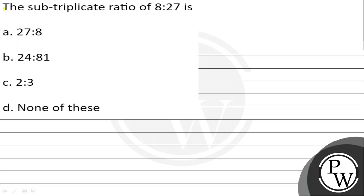The question asks: the sub-triplicate ratio of 8:27 is? Four options are given. You have to choose the correct one.